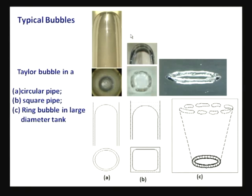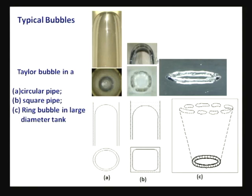When one particular volume of gas is introduced into a stationary column of liquid, it rises as a single elongated bullet-shaped Taylor bubble. Interestingly, when such an air volume is introduced into a very large tank (infinite medium), it does not form Taylor bubbles — it forms ring bubbles that gradually expand outward, become thinner, and finally break up into satellite bubbles. But when confined in a column by walls, the bubble immediately transforms into an axisymmetric bullet-shaped Taylor bubble.